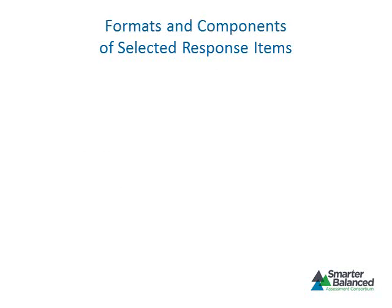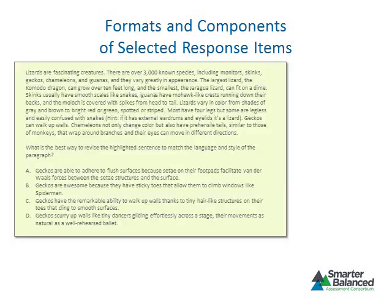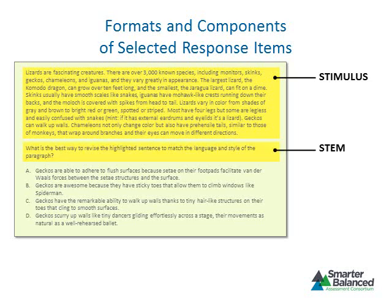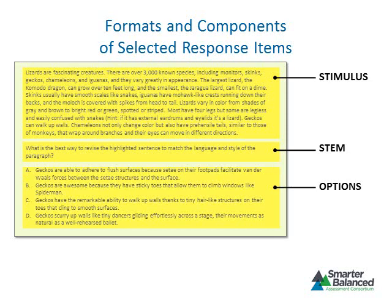The Smarter Balanced Assessment System uses both traditional and non-traditional selected response items. A traditional grade 9 selected response item—sometimes referred to as a multiple choice item—contains a stimulus, a stem, and four options. The stimulus is the passage that sets the context for the item. The stem is the statement of the question to which the student responds, sometimes also referred to as a prompt.